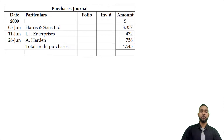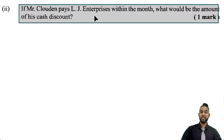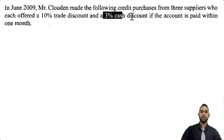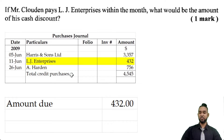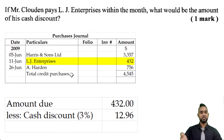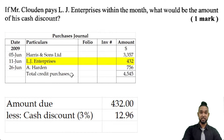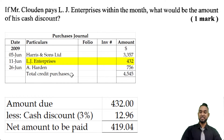The final part of the question asks: if Mr. Cloudon pays LJ Enterprises within the month, what would be the amount of the cash discount? The question told us they get a 3% cash discount if the account is paid within a month. Starting with the amount due of $432, we find 3% of $432, which is $12.96 — some may round it to $13. Subtracting that gives an amount payable of $419.04 after taking into account the cash discount.